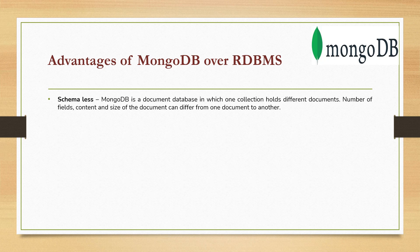In SQL and RDBMS, you have a table and within that table you have defined columns, and every column has a fixed size. But in MongoDB, you can store different documents within a collection and every document can have a different size — the number of attributes as well as the number of fields can also differ.